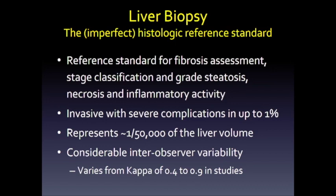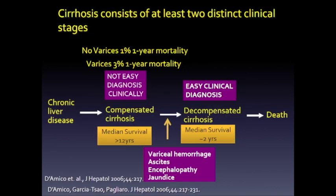There is very much inconsistency among pathologists interpreting liver biopsies. This table describes cirrhosis, which consists of two distinct clinical phases.